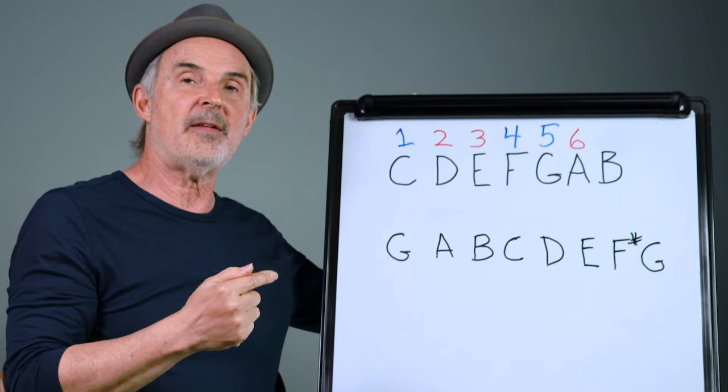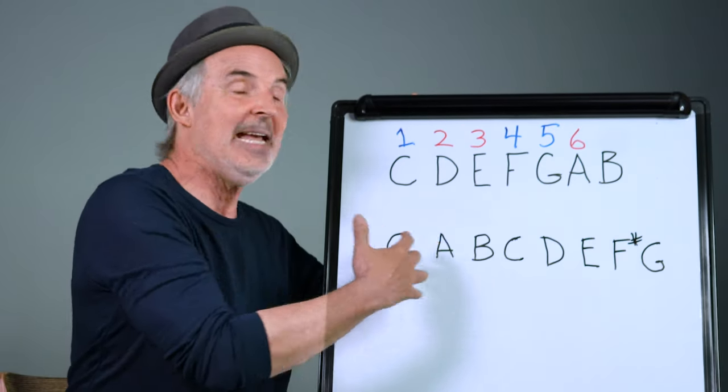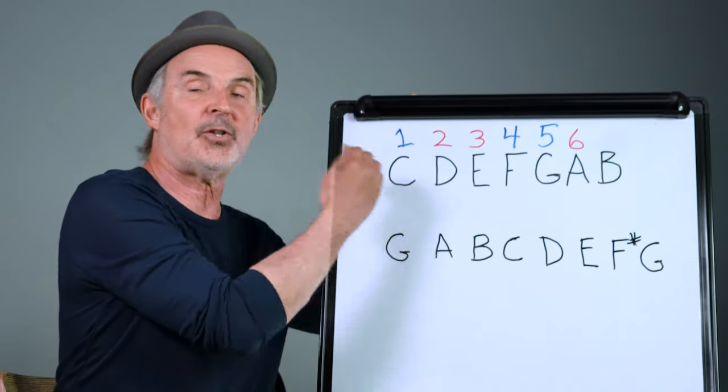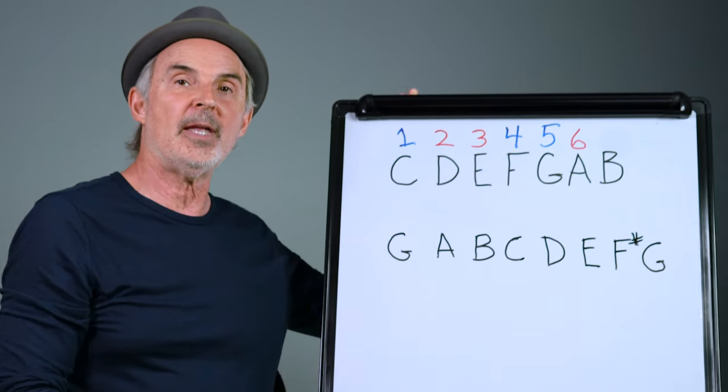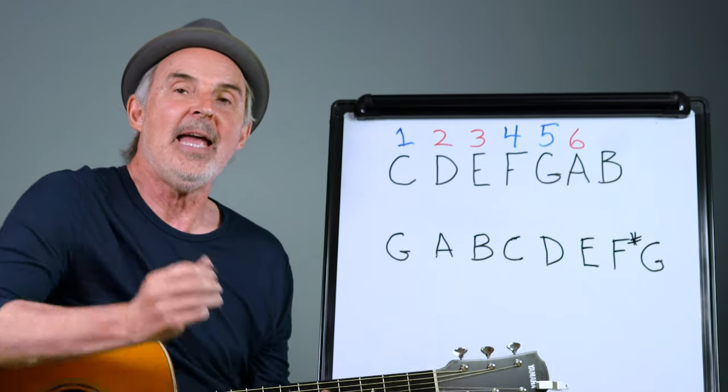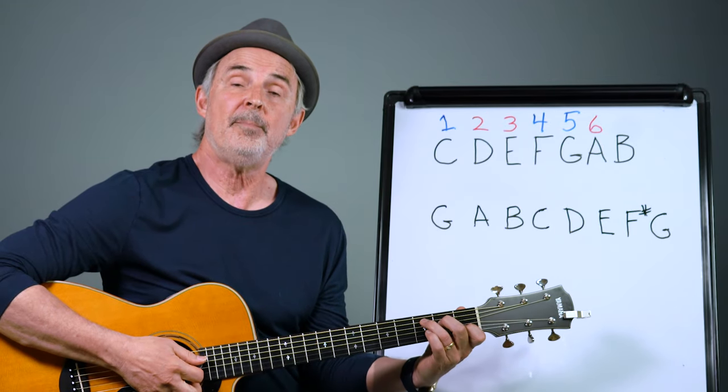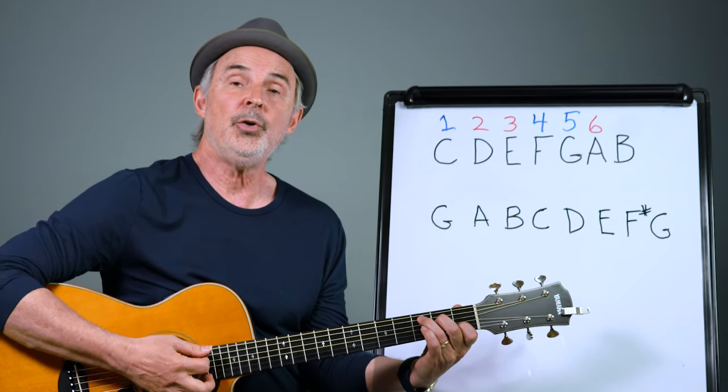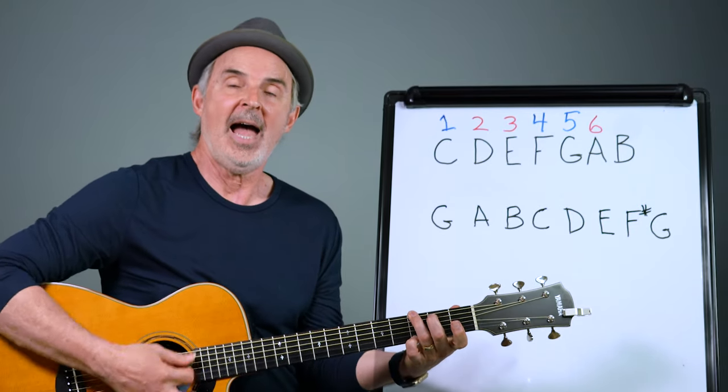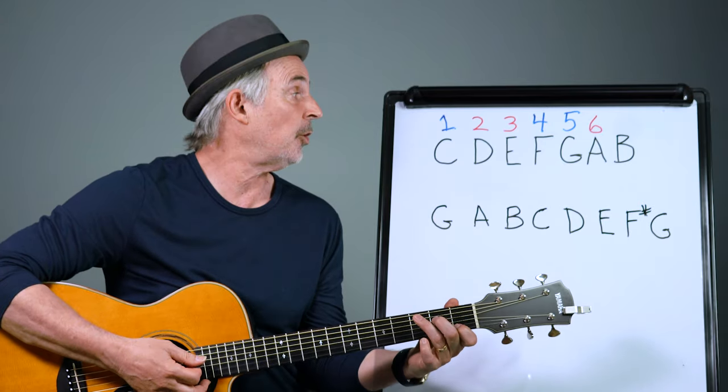Now this is important because if you play a song and you play the one, four, and five, it's really going to sound like the four and five are kind of setting you up to go back to the one chord. Let me show you an example. I'm going to play Happy Birthday in the key of C, so it goes happy birthday C to the five G.